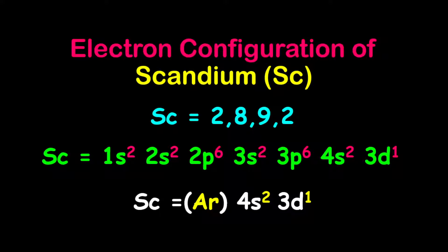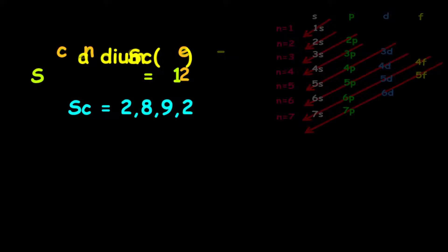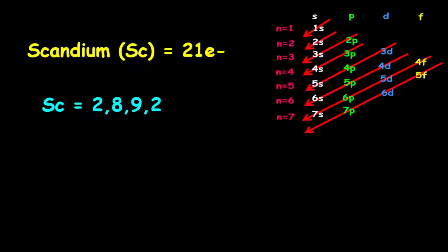The electron configuration of scandium. Scandium has 21 electrons: 2 electrons on the first shell, 8 electrons on the second shell, and 9 electrons on the third shell.